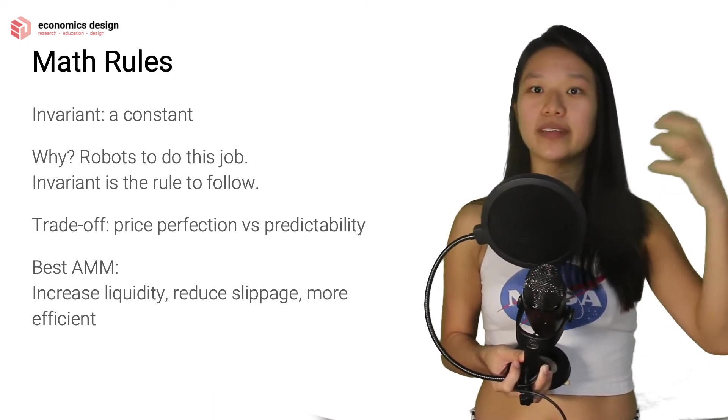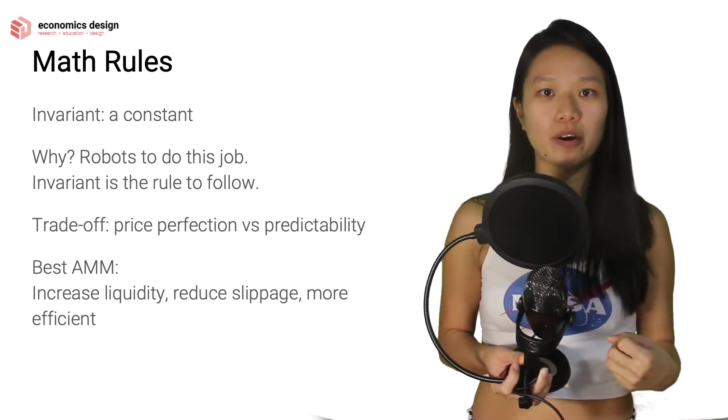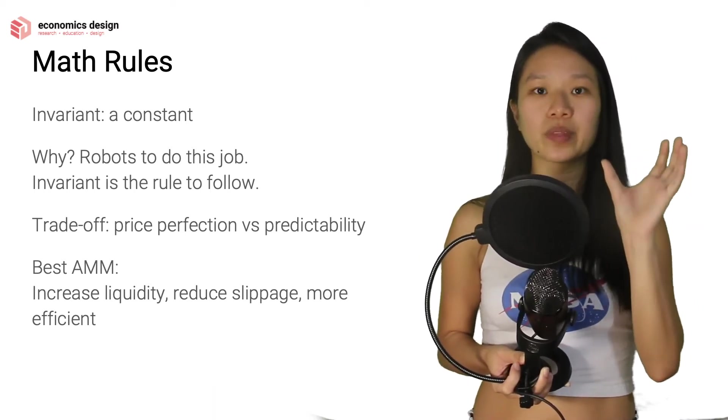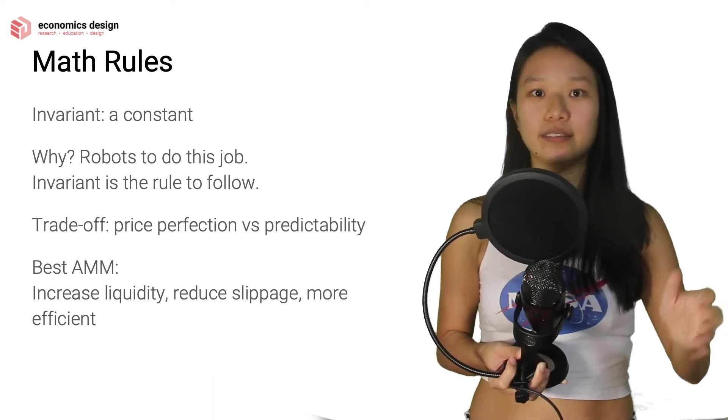So when the robot is getting information, trade pricing, order pricing, oracle pricing, they know that they have to follow this invariant, this constant rule, this constant variable that they have to follow, and that's how they can execute them well.